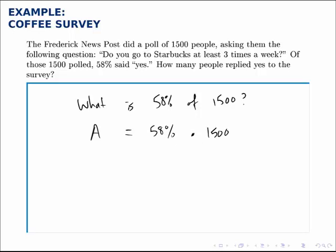If we want to multiply, we need to convert this 58% to a decimal, so we write that as A equals 0.58 times 1,500. 0.58 times 1,500 is 870. So the answer to the question is that of the 1,500 people polled, 870 replied yes.